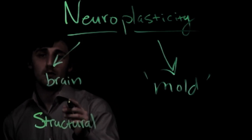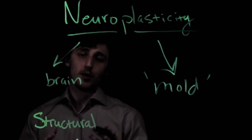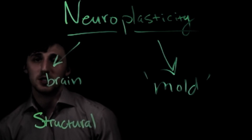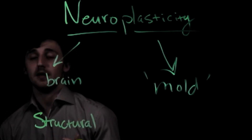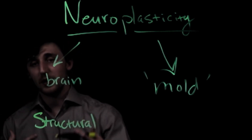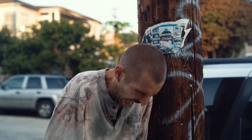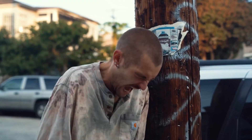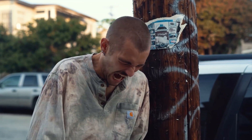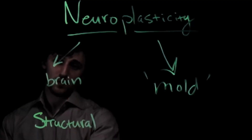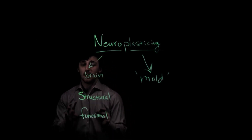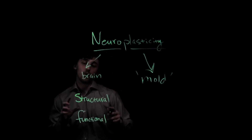Structural neuroplasticity refers to our brain actually physically growing or shrinking in response to experiences and learning. An example is your amygdala — if you experience stress over and over again, you can have an overdeveloped amygdala, which is the portion of your brain responsible for stress.